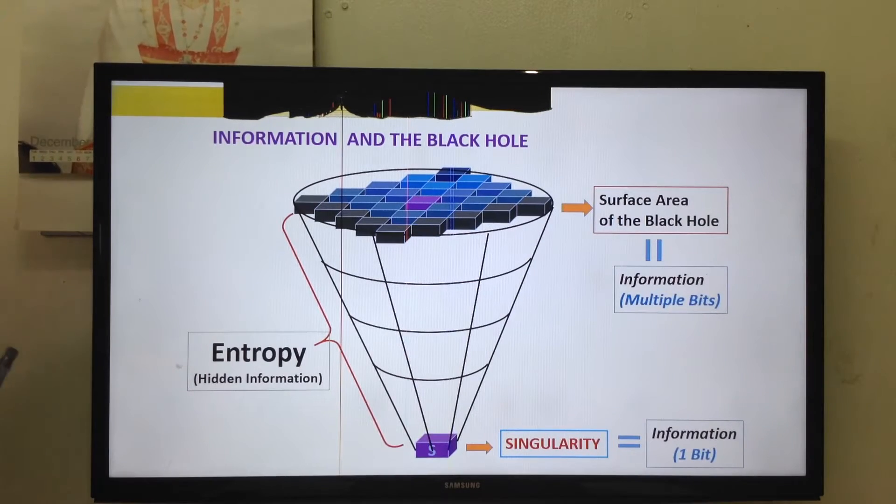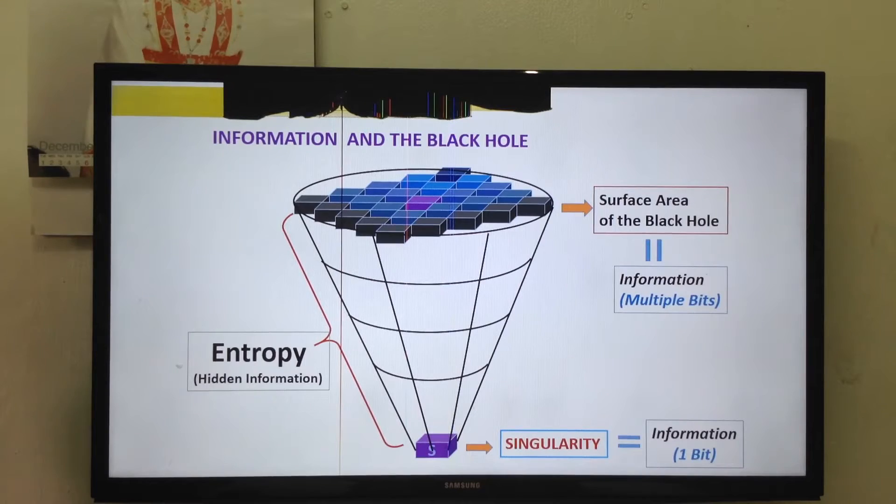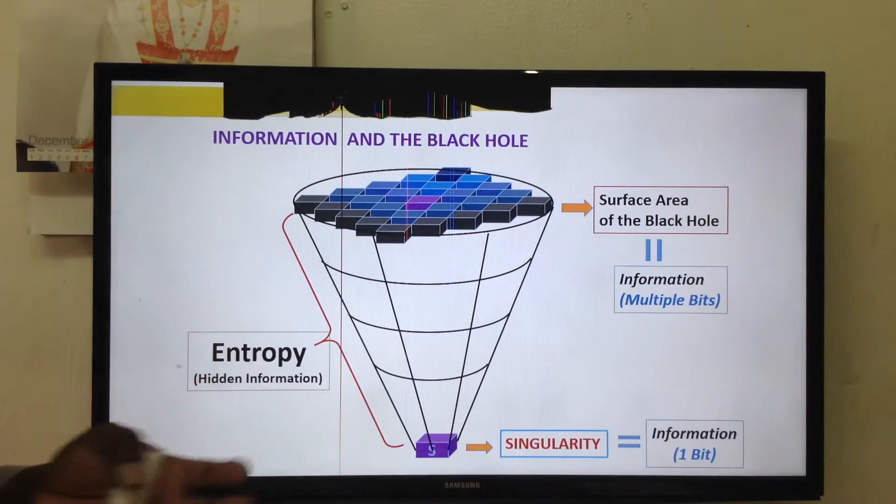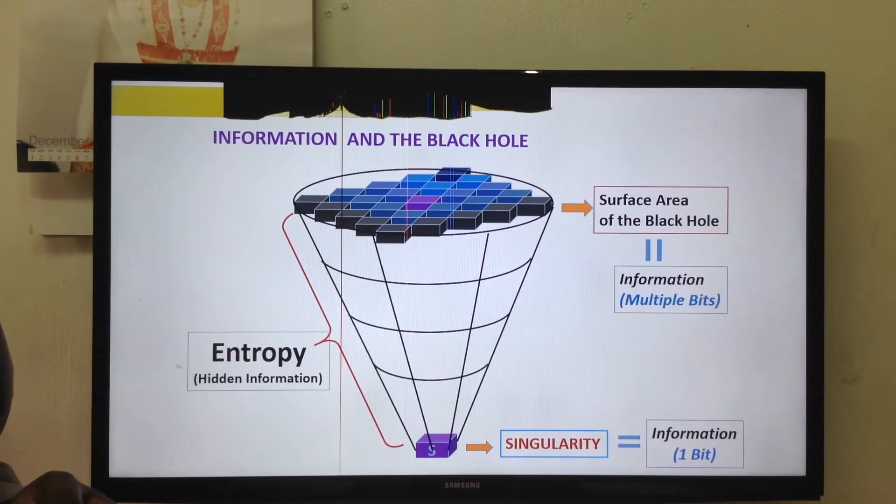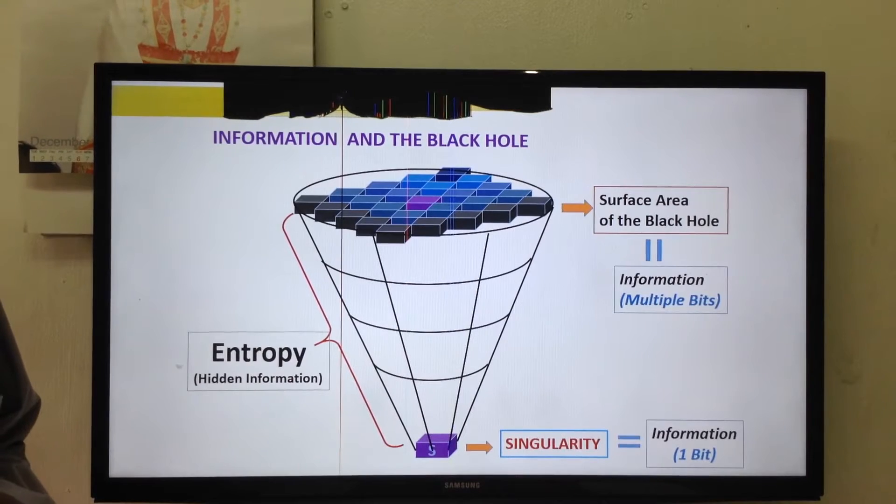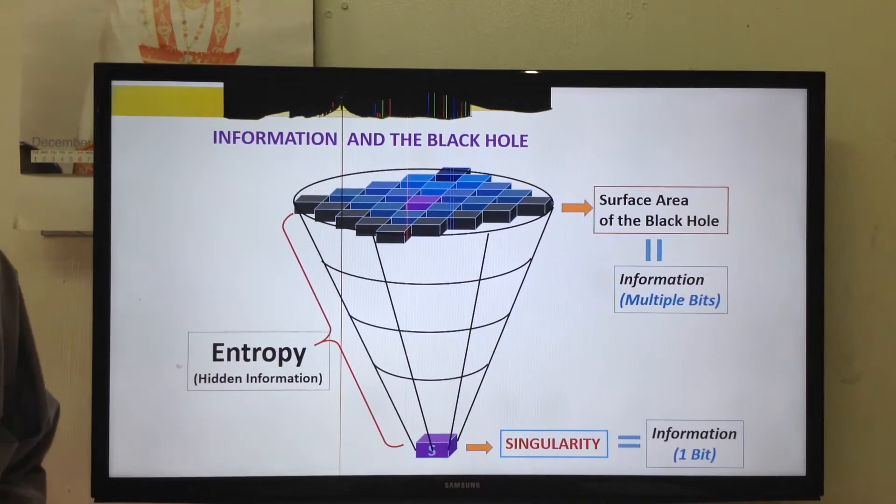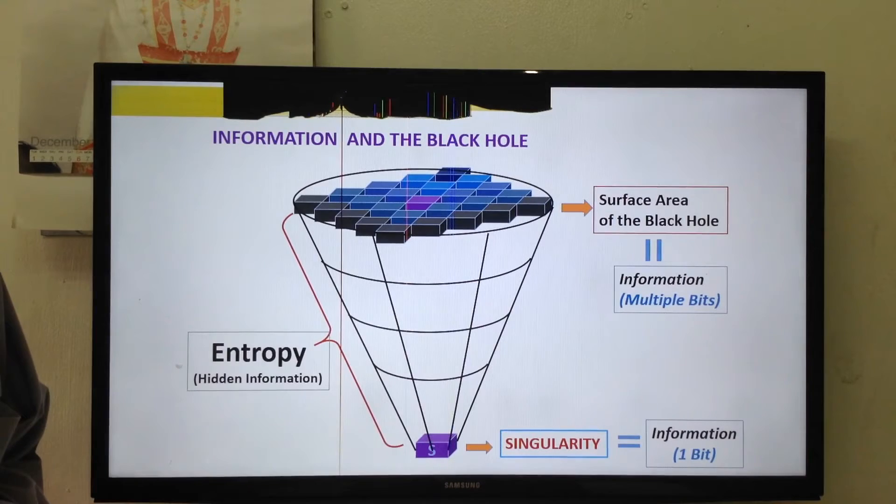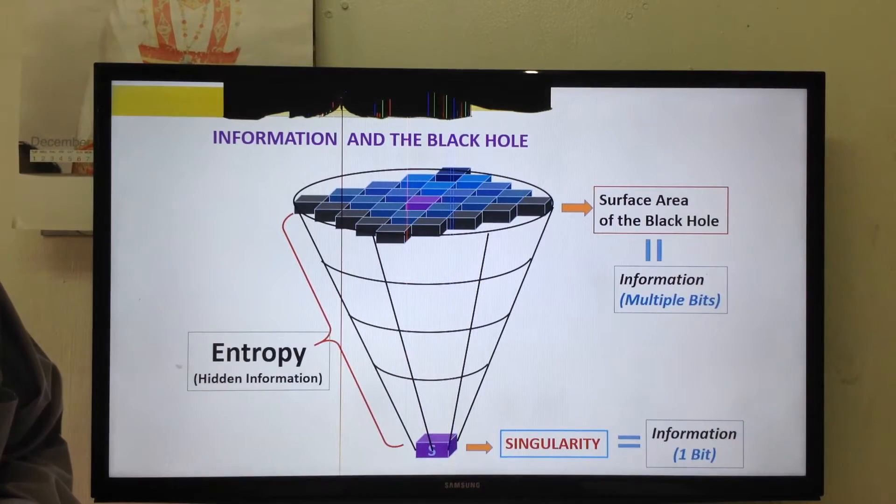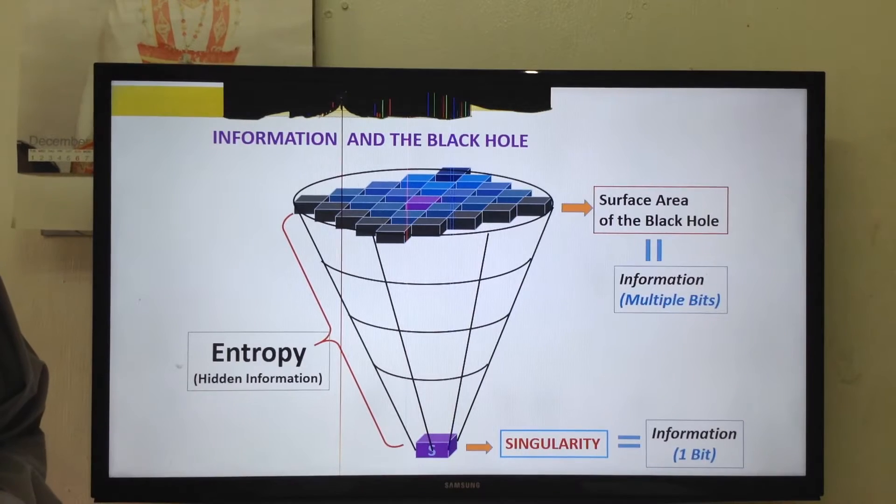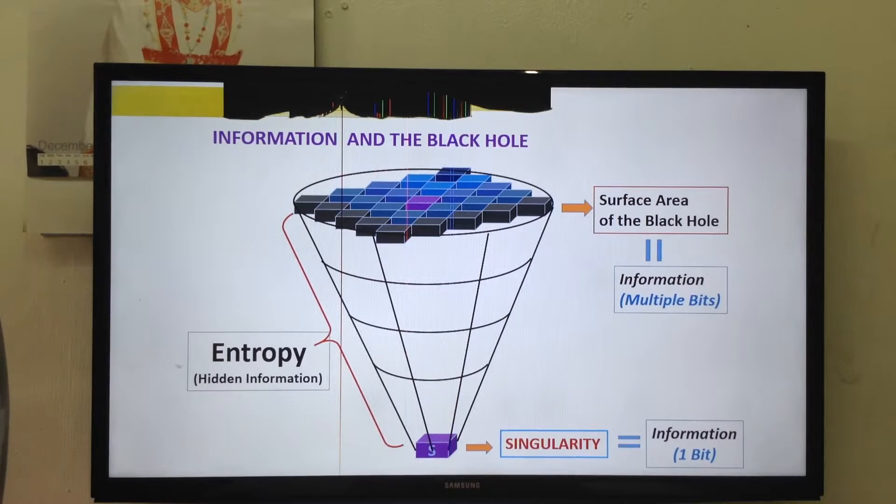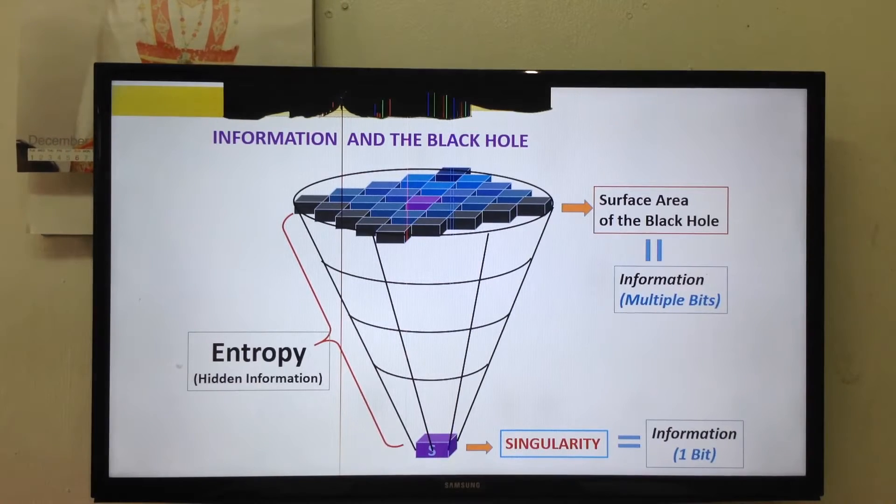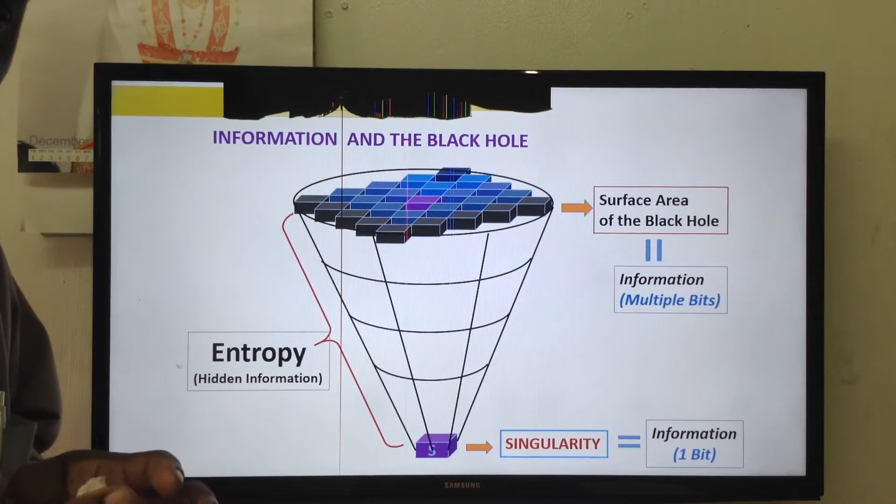Imagine a huge star like our Sun. This star becomes unstable. It will lose its fuel. Then it will collapse to its center. First reduce to the size of a neutron star. Then it doesn't stop there. It will continue to collapse until it becomes just one point. So all the content of the star will be confined on one point.